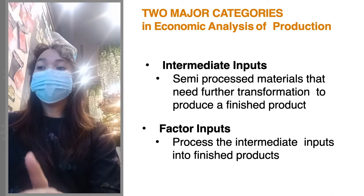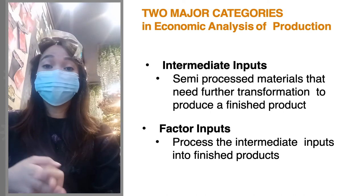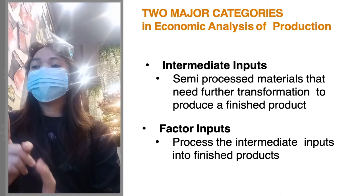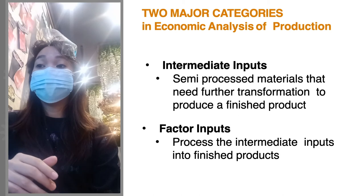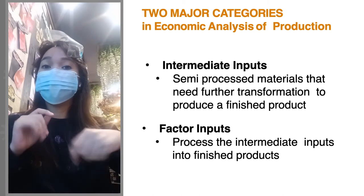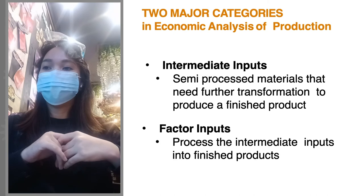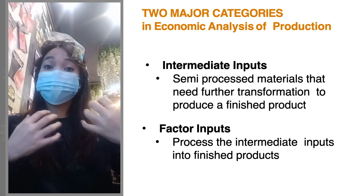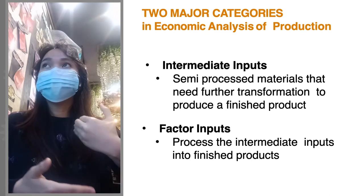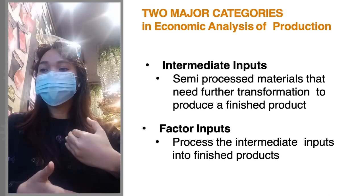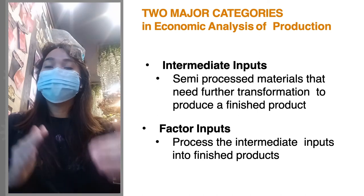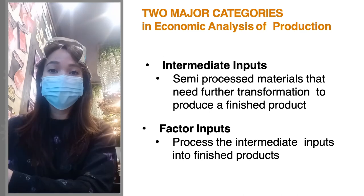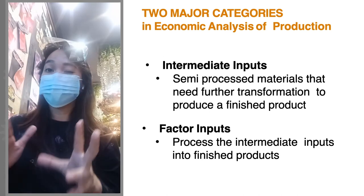Within the IPO framework, there are two types of inputs: intermediate input and factor input. Intermediate inputs are semi-processed materials that need further transformation — they still need to go through a process before producing the finished product. Factor inputs are what you apply to the intermediate inputs in order to process them into a finished product.